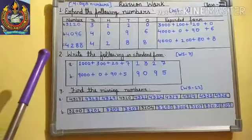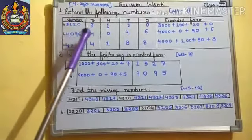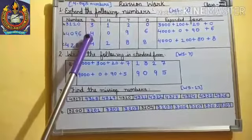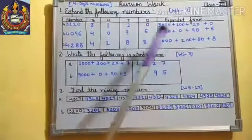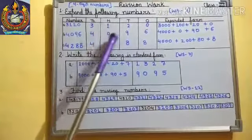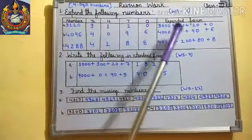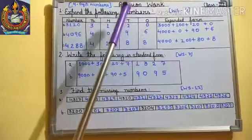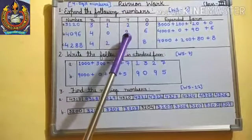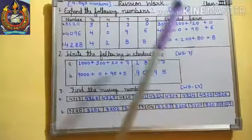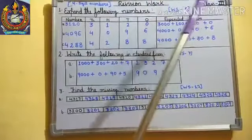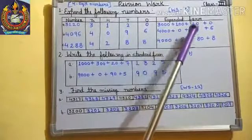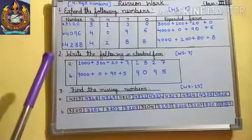We will write here after that what will be the expanded form. Let's see. Four thousand, so we will write four thousand. How many hundred? Zero, we have no number here, zero is here, so we will write here zero. After that, how many tenths? Nine tenths, so we will write ninety. And how many ones? This is six.